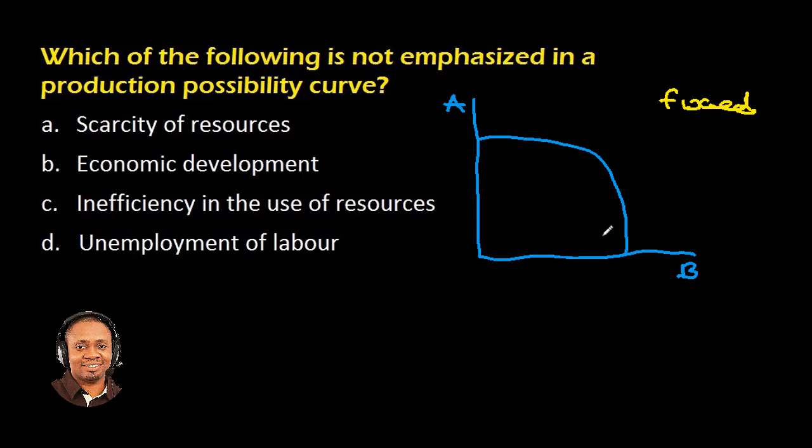The third assumption is that the technology and production techniques do not change as well. The fourth assumption is that resources that are used are used in a technically efficient way. So with this, let us go to the question and the answer options. Which of the following is not emphasized in a production possibility curve?